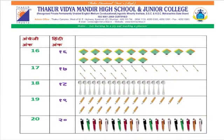अंग्रेजी में 16, Hindi में १६ (solah). कुल 16 पतंगे? 1, 2, 3, 4, 5, 6, 7, 8, 9, 10, 11, 12, 13, 14, 15, 16. कुल 16 पतंगे।